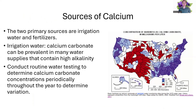First, we need to start off with sources of calcium. There are going to be two main sources: your irrigation water and fertilizers. Your irrigation water can contain calcium carbonate and can be prevalent in many of the upper Midwest regions, especially where you're over limestone. Here in the Southeast, we have very limited alkalinity, but conducting routine water testing to determine calcium carbonate concentrations periodically throughout the year will help you understand how much calcium you need to be supplying.